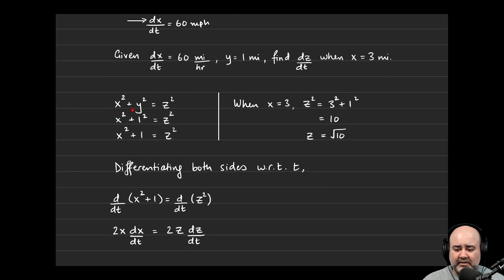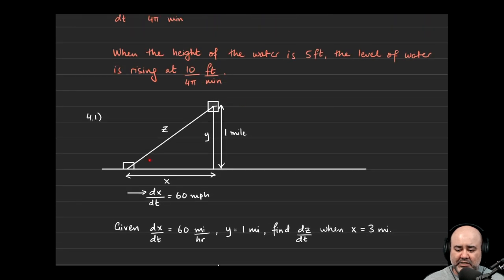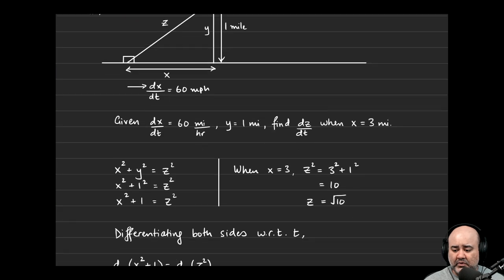We start with a Pythagorean theorem application: x² + y² = z². We can replace y with the constant 1, so we have x² + 1 = z². When x equals 3, we can figure out the distance: z² equals 10, which implies z equals the square root of 10. We ignore the negative because z is the distance between two objects — it cannot be negative.